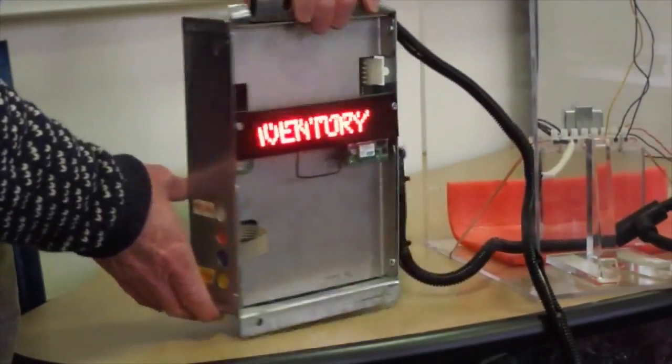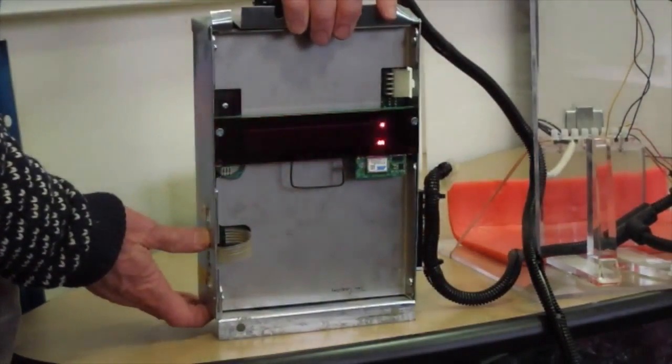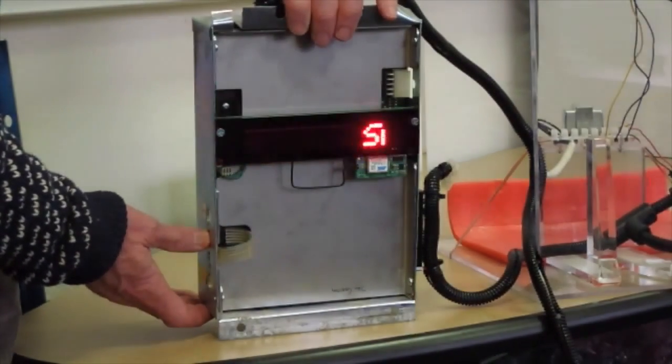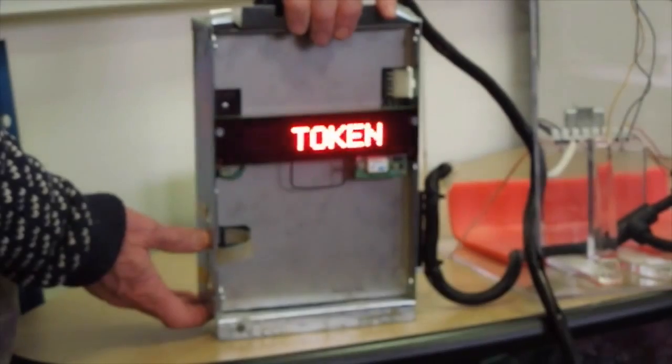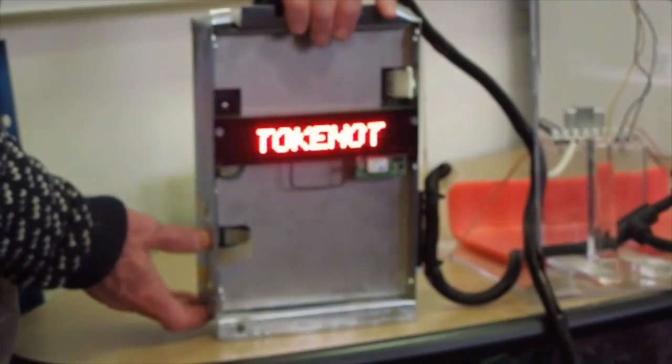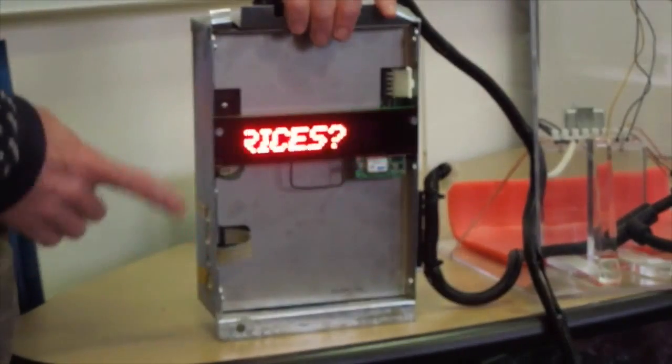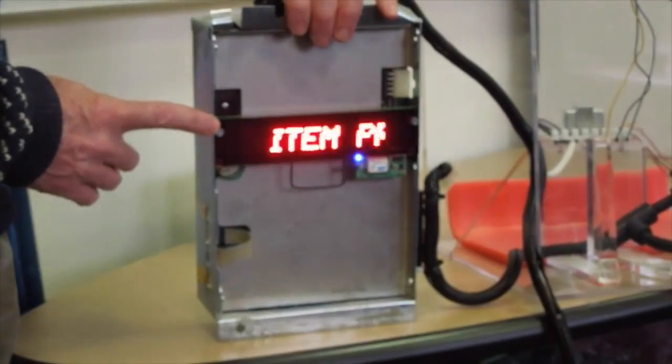We're in the first menu item, which is inventory vending. We're going to advance it by pressing the red button until we end up at the menu item that says item prices. We simply need four unique prices.